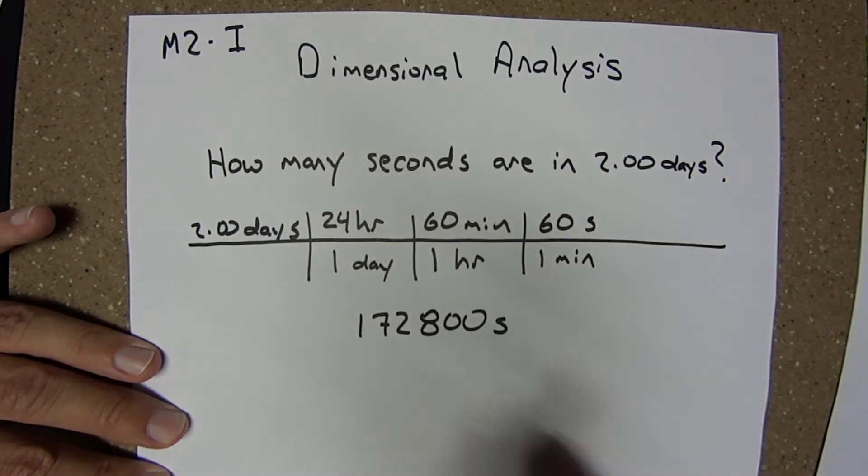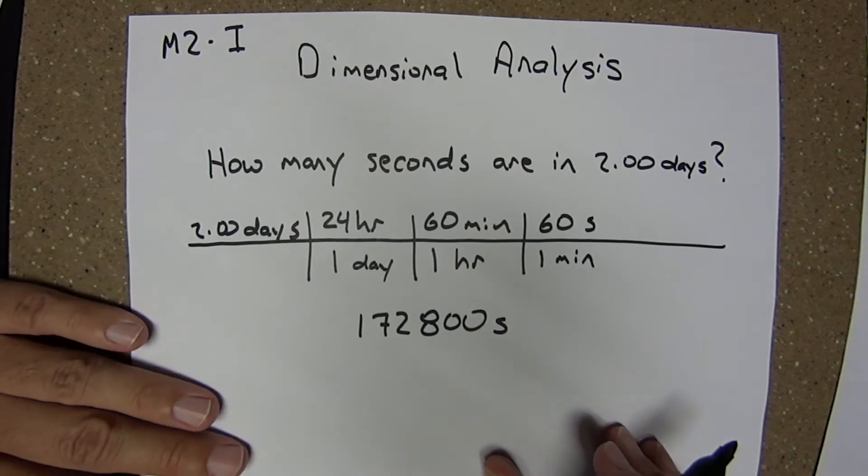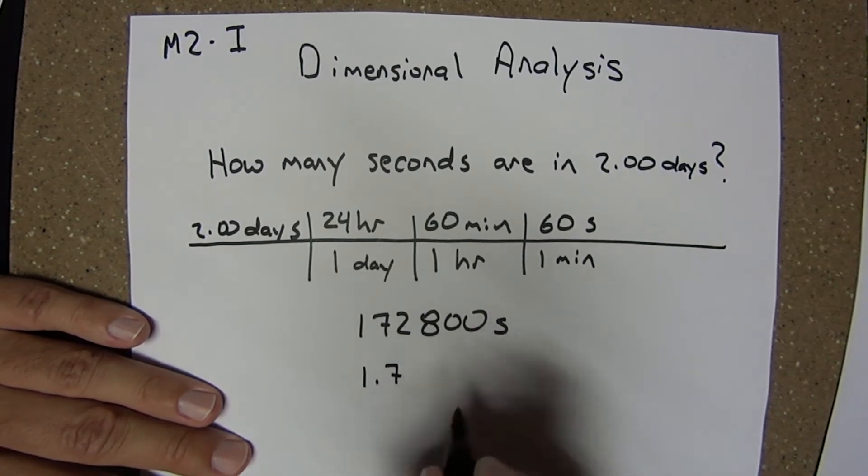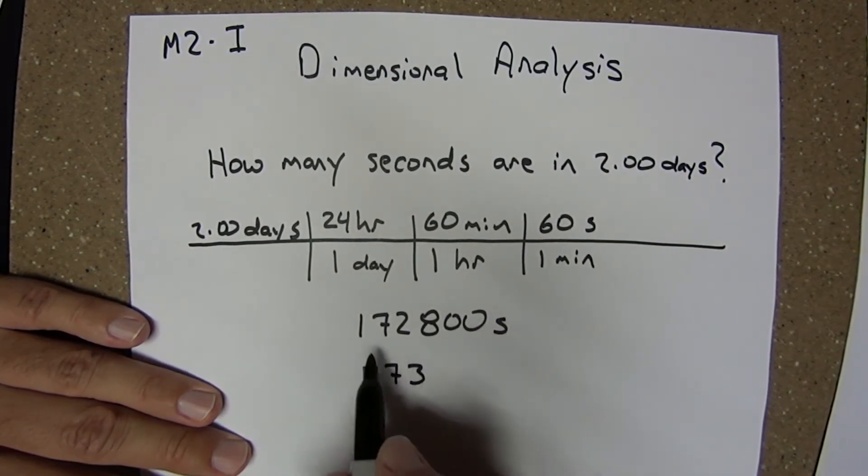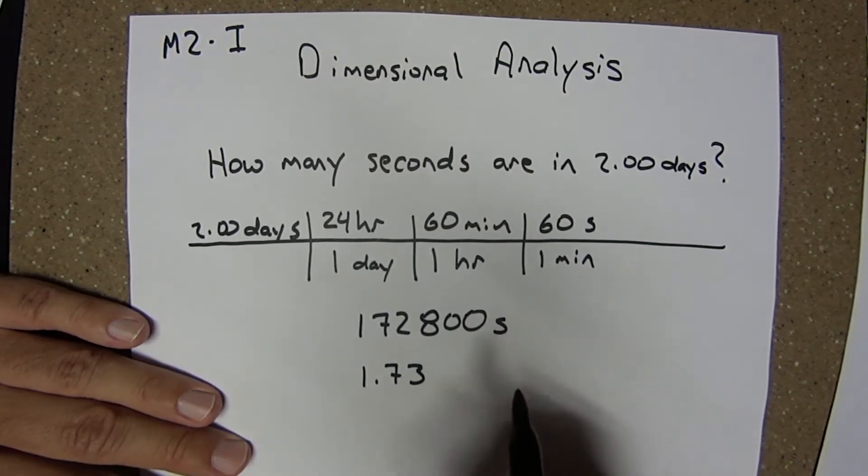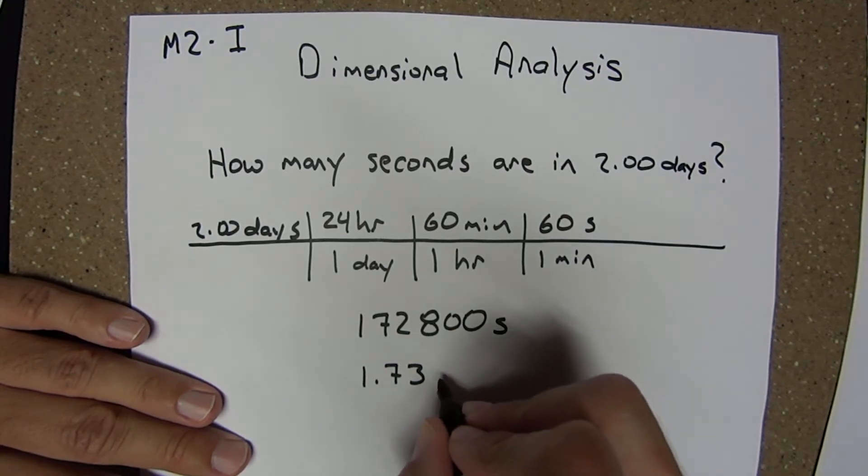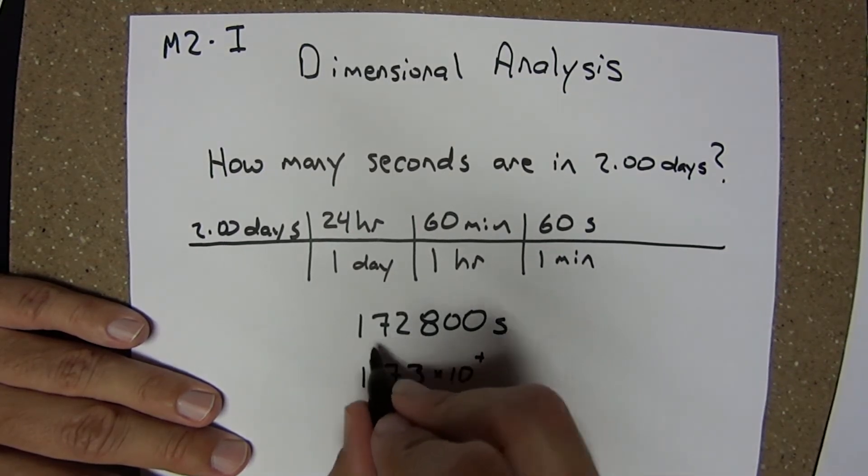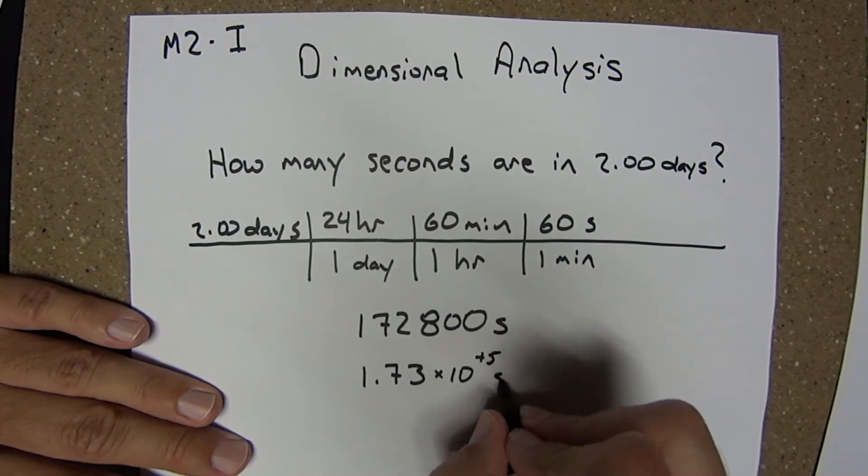I'm going to express this in normalized scientific notation. This would become 1.73. I'm justified in only 3 significant figures here. There will be a module dealing with just significant figures. Later, right now, we'll just keep it as 3 significant figures. Times 10 to the positive 5 seconds.